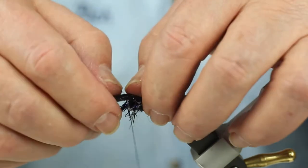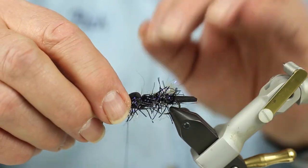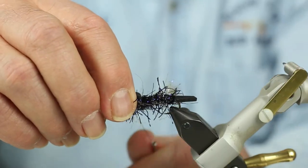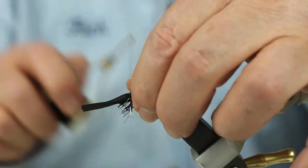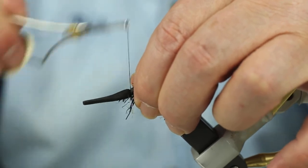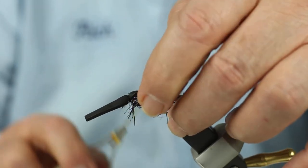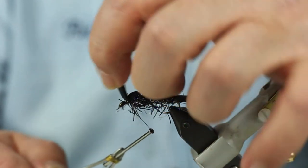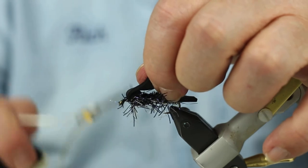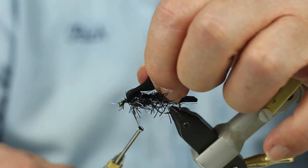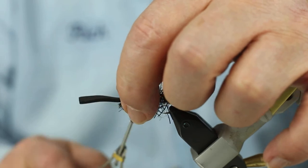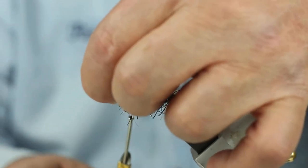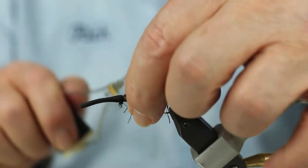I'm going to fold the carapace forward over the chenilles that I've tied off and make the carapace. Then, I'm going to bend the rubber back, work my thread up toward the eye. And now, I'm right near the eye. I'm going to form the head, a round head.